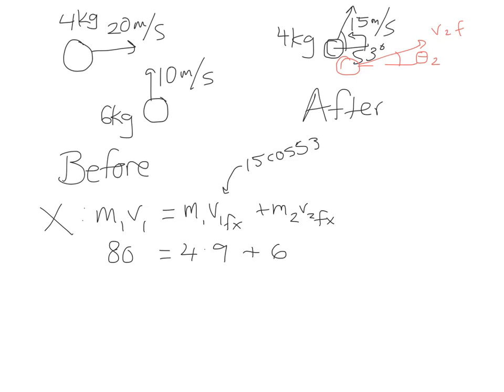So that means, plug in some numbers. v1 final x is 9, rounding a little bit. I realize 15 cosine 53 is not exactly 9 but let's just roll with it. So 4 times 9, and then for m2 it's 6 v2 final x. A little bit of simplifying, 4 times 9 is 36, subtract that over, 80 minus 36 is 44. So 44 sixths, or 22 thirds, or like just about 7, but you're not allowed to say like just about 7. So there's our x component, 22 thirds.